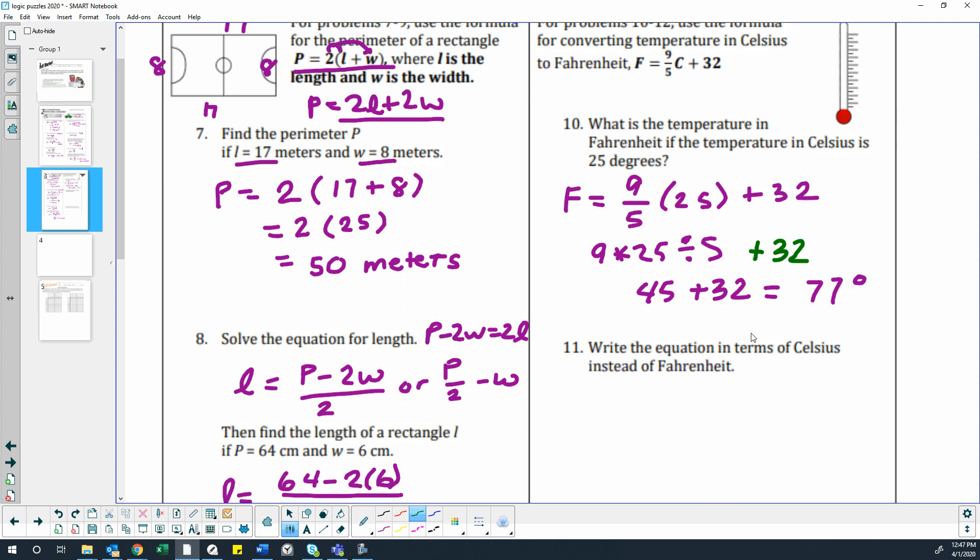So the next one, we want to solve our equation for Celsius. That means we're going to get C by itself. So to do that, let me write this down so we can go through the process together. So right now, F equals 9 fifths C plus 32.